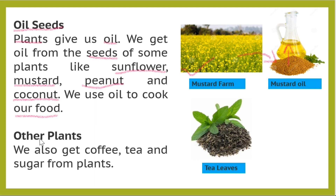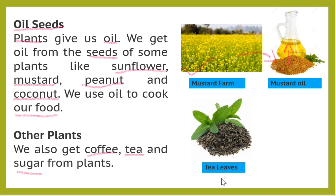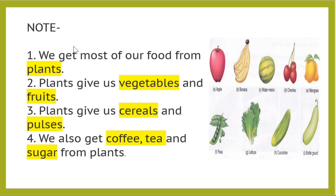Next, there are other plants. We also get coffee, tea, and sugar from other plants. Here you can see we get tea from the tea plant. To summarize: we get most of our food from plants. Plants give us vegetables and fruits, cereals and pulses, and we also get coffee, tea, and sugar from plants.